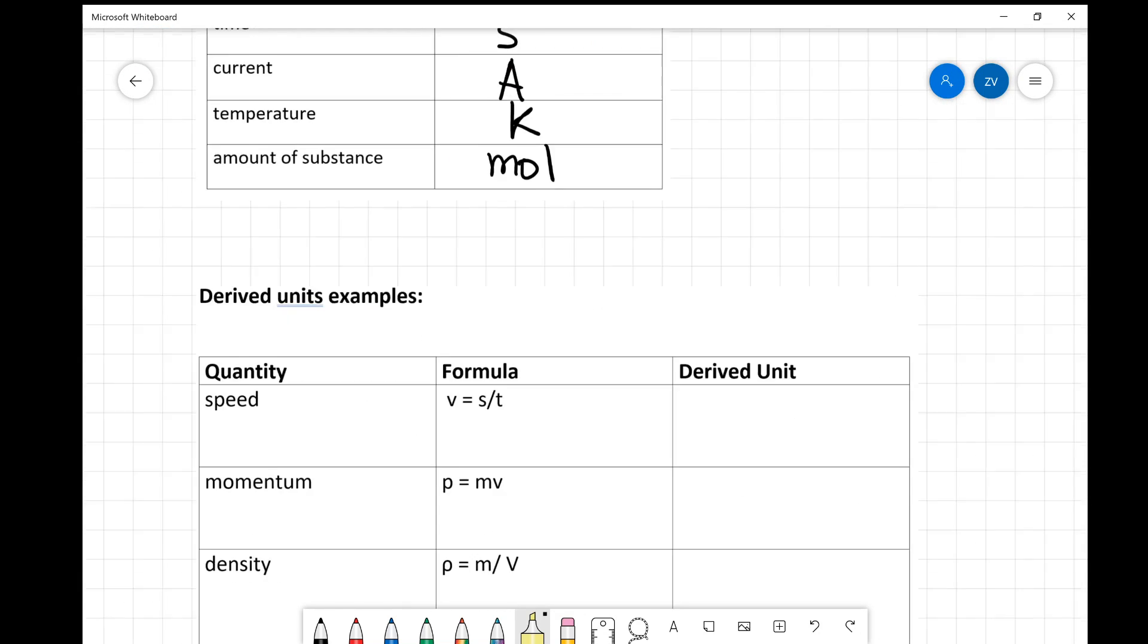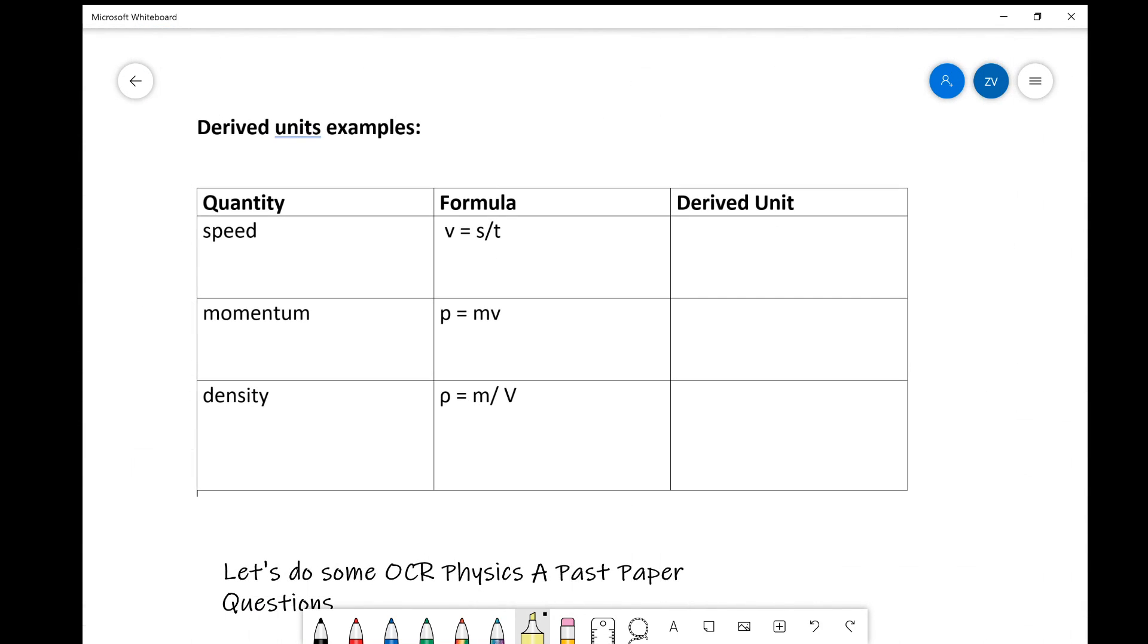Now if something is not a base unit, it can be derived in terms of those base units and hence it's a derived unit. Let me give you a couple of examples. So let's start off with a couple of simple ones. The trick is to always think what the formula for that quantity is and then try to think about the derived unit from there. So let's have a look at speed.